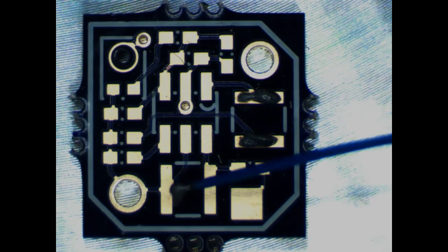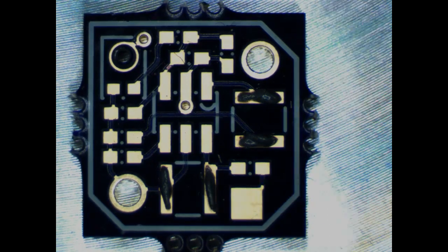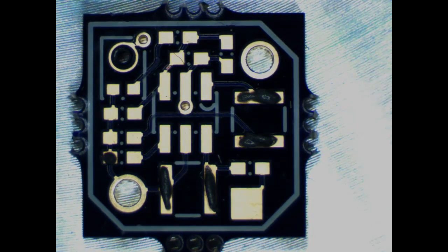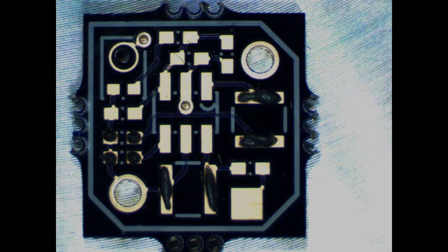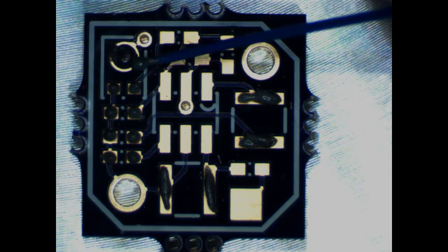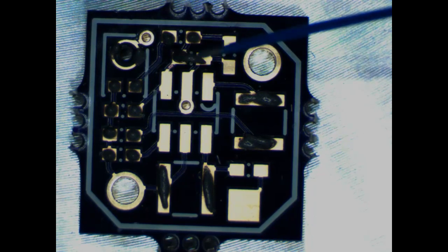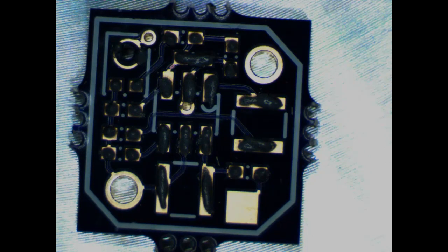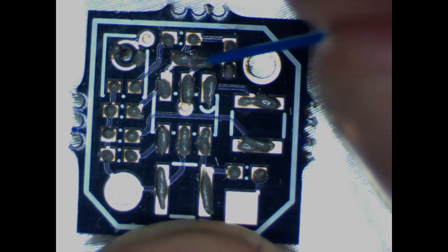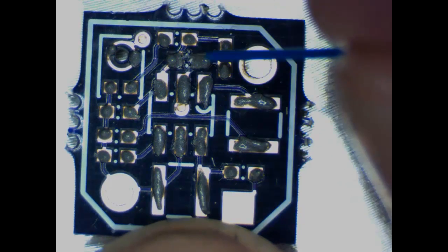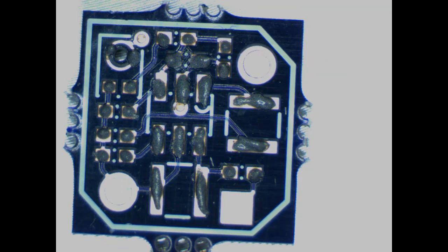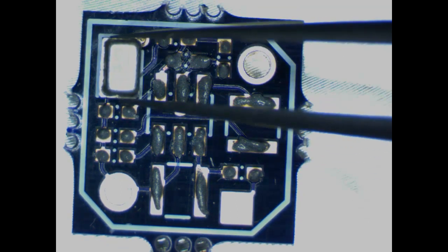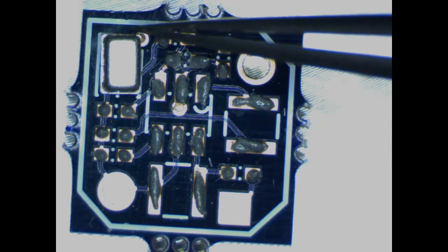First we put some solder paste on each pad. Then the components are placed on the PCB. I start with the microphone here.